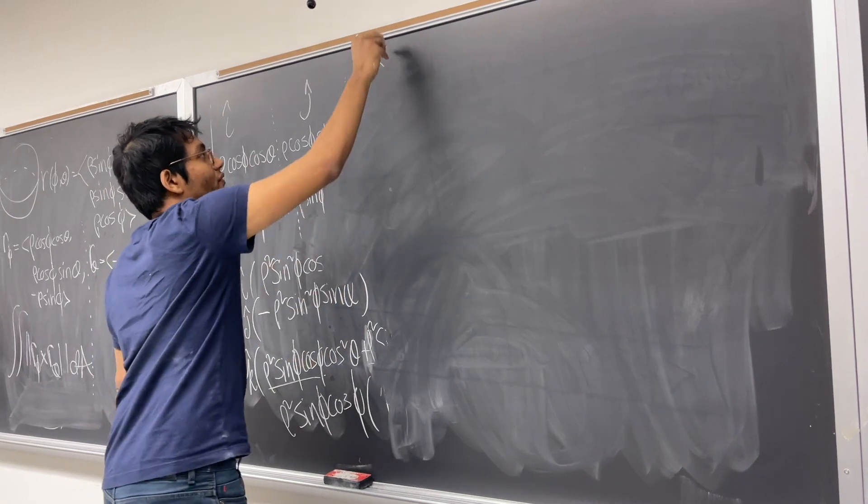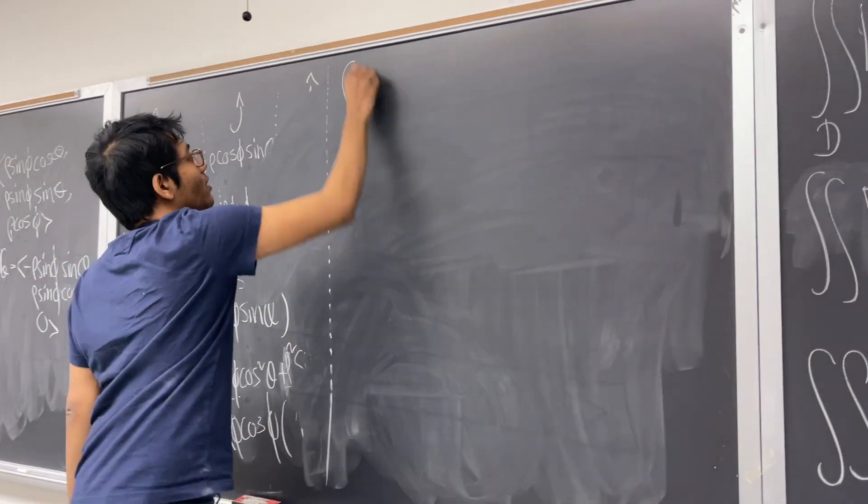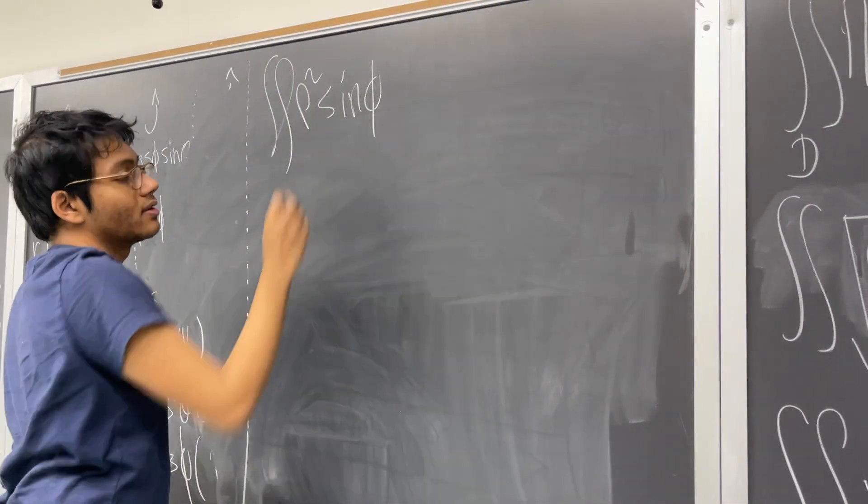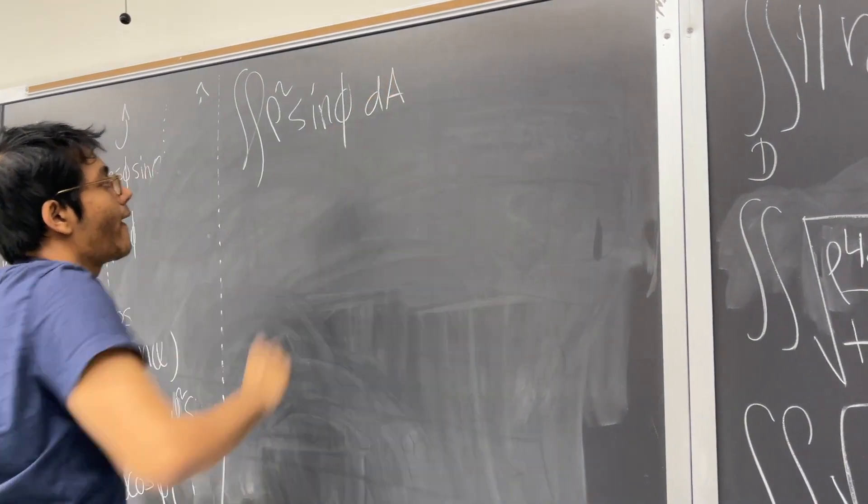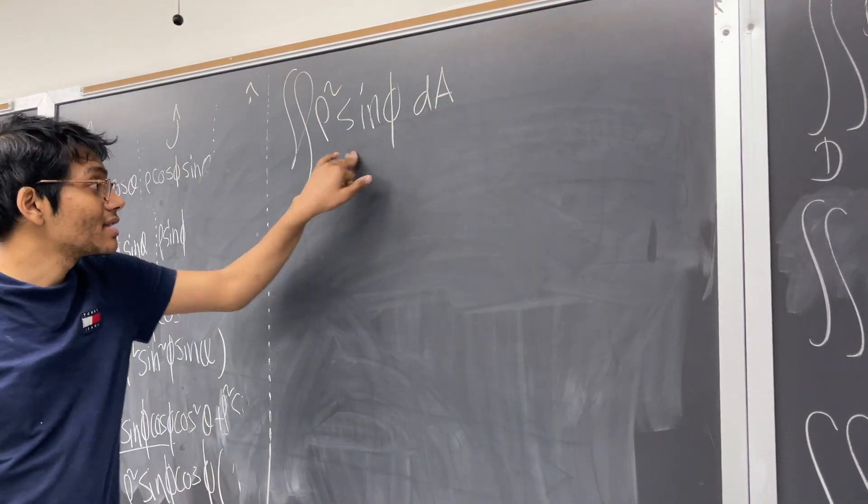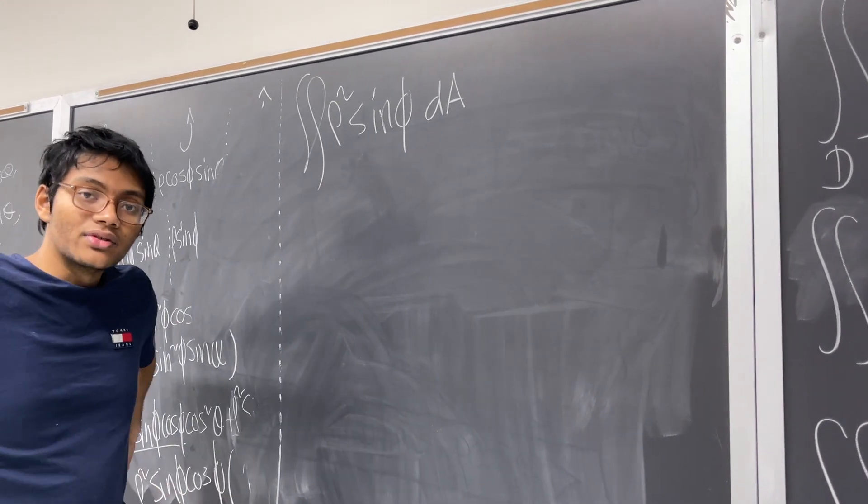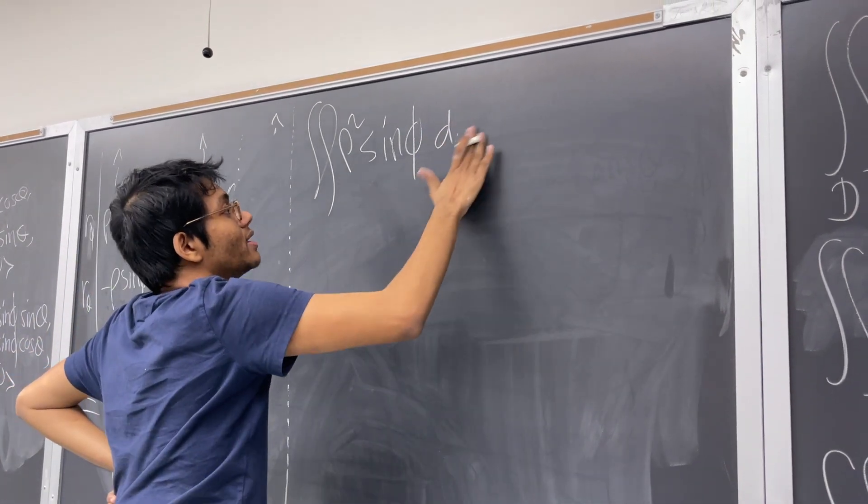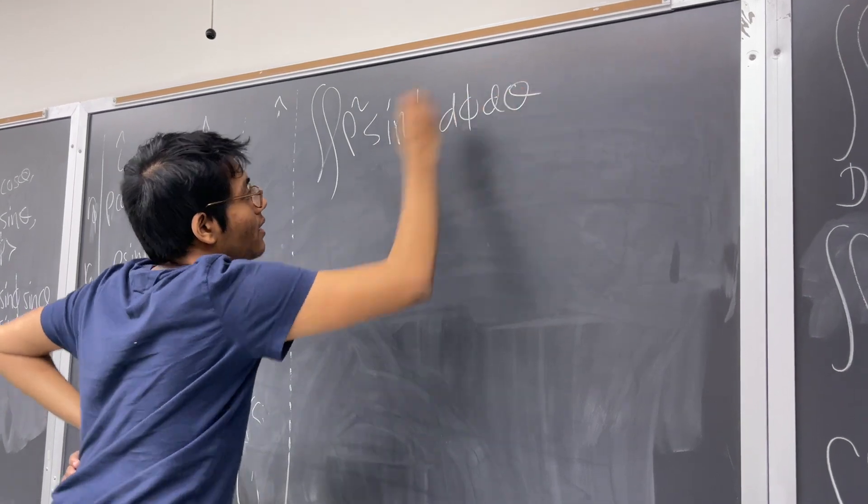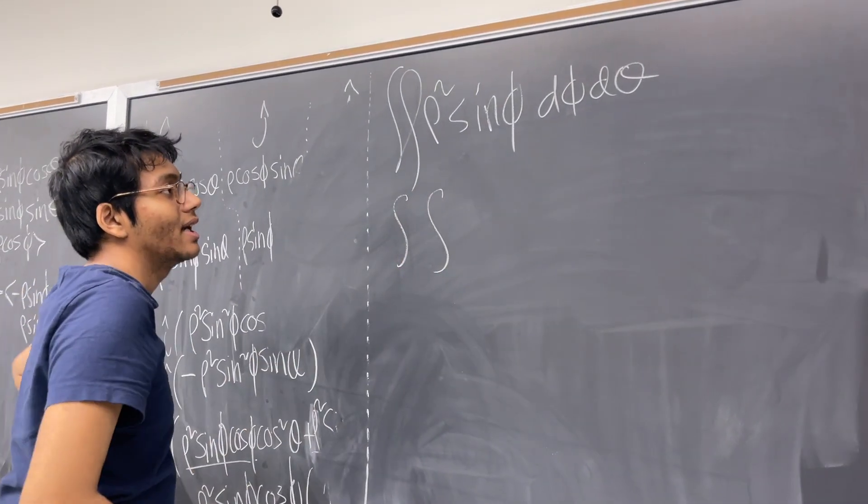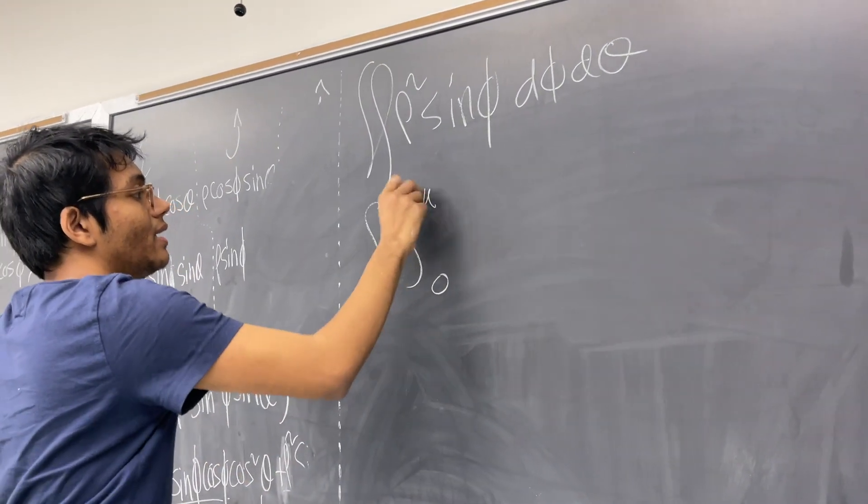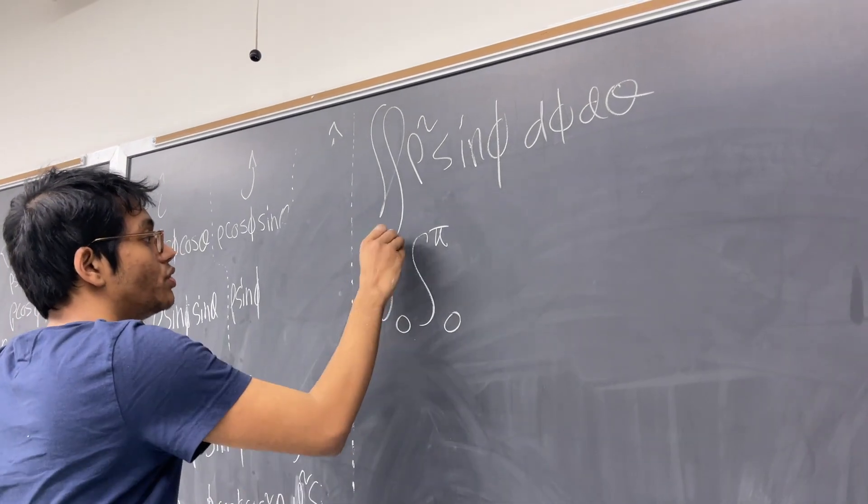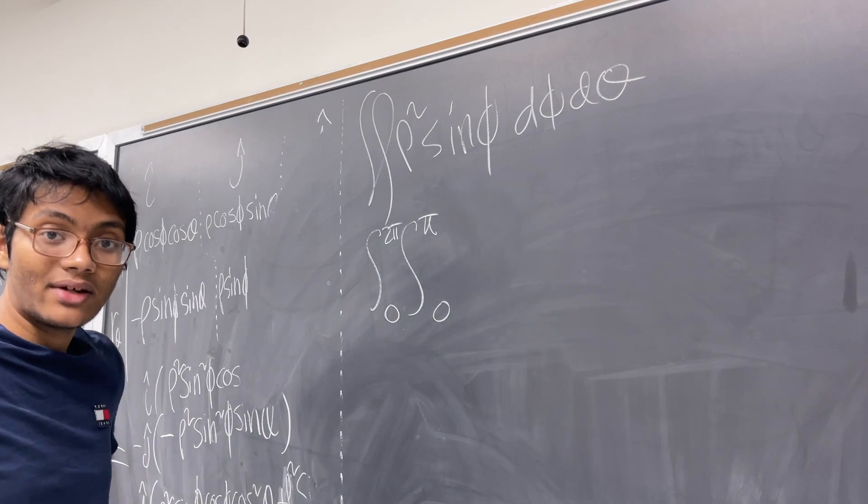Okay, so we have the following. We have the double integral of rho squared sine phi dA. Okay, so now your integrand is something that looks very simple. So now the question is what are your limits of integration going to be? So let's try out something. Okay, so my dA is going to be d phi d theta. And I'm going to say my phi goes from 0 to pi and my theta goes from 0 to 2 pi.